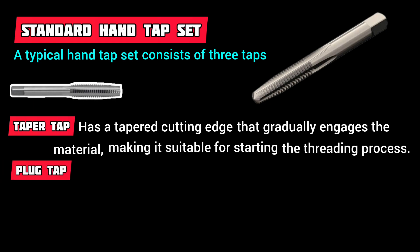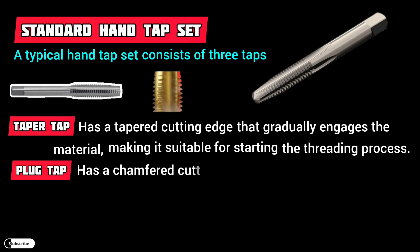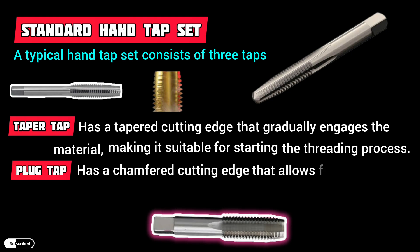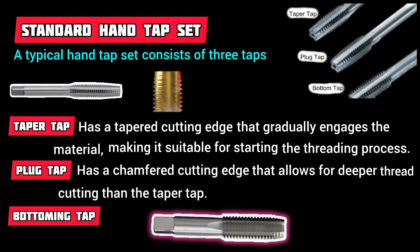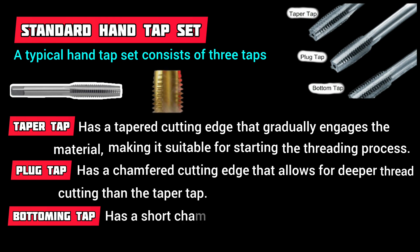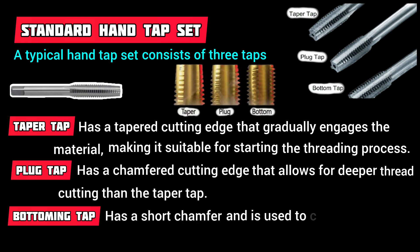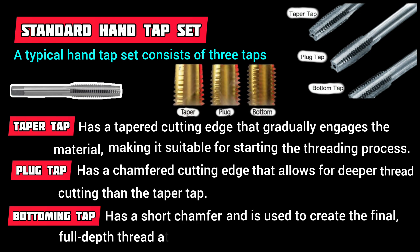The Plug Tap has a chamfered cutting edge that allows for deeper thread cutting than the taper tap. The Bottoming Tap has a short chamfer and is used to create the final, full-depth thread at the bottom of a blind hole.